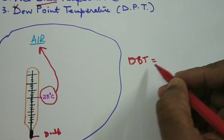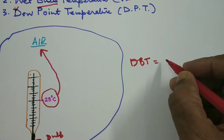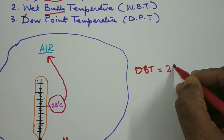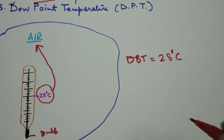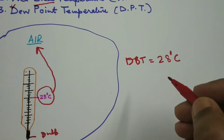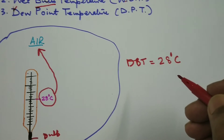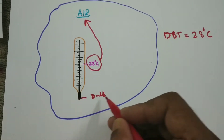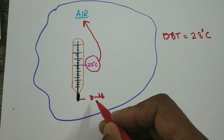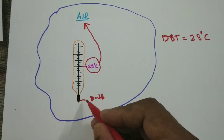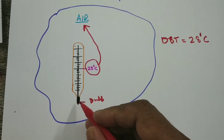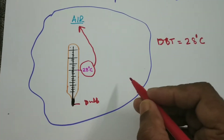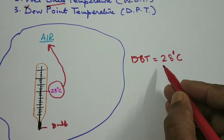So what is dry bulb temperature? Dry bulb temperature is the temperature of the air — not the temperature of anything else. In this case it is coming as 28 degrees centigrade. Another way of understanding dry bulb temperature is that it is the temperature at which the bulb of the thermometer is not wetted — it does not have any liquid surrounding it. It is just an ordinary dry bulb, and therefore it is dry bulb temperature.